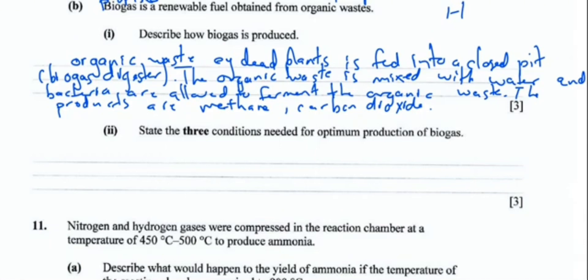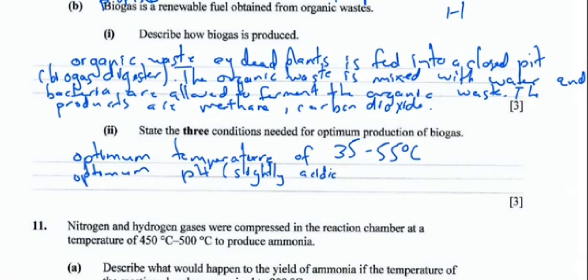State three conditions needed for optimum production of biogas. For biogas production to take place, we need an optimum temperature because there are going to be enzymes involved. So we need temperature of between 35 to 55 degrees Celsius. Then we need an optimum pH, which is slightly acidic or slightly alkaline. The optimum pH levels would be around 6.5 to 7.5. Extremely low pH can inhibit microbial activity and reduce the yield of biogas. Higher pH levels can also lead to ammonia toxicity. We also need to exclude air - no oxygen is needed. We need anaerobic conditions so that we can have fermentation taking place.